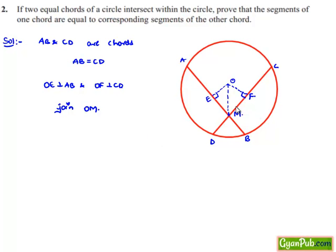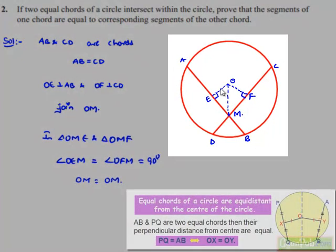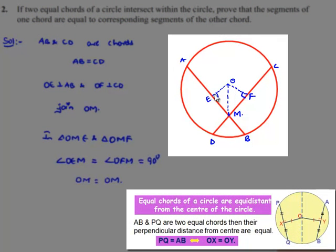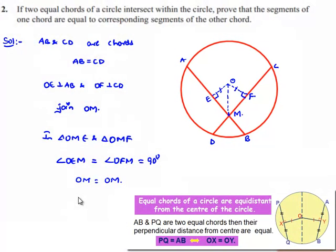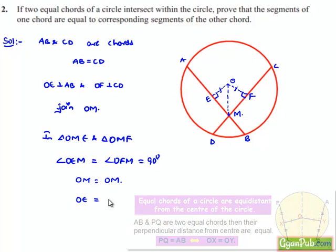Now here if we observe in triangle OME and triangle OMF, angle OEM is equal to angle OFM is equal to 90 degrees since we have drawn the perpendicular, and OM is equal to OM which will be the common side for both triangles, and the perpendicular drawn from center to the equal chords will be of equal length. Therefore, we can say that OE is equal to OF.